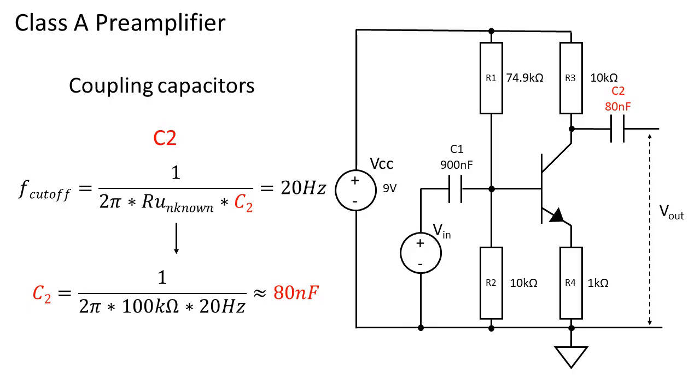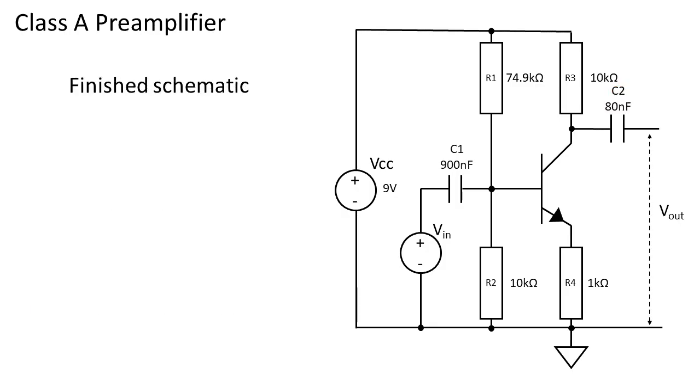Of course you can change both C1 and C2 into a way larger value to make sure all audio signals pass the amplifier stage without attenuation. Our completed schematic looks as follows.